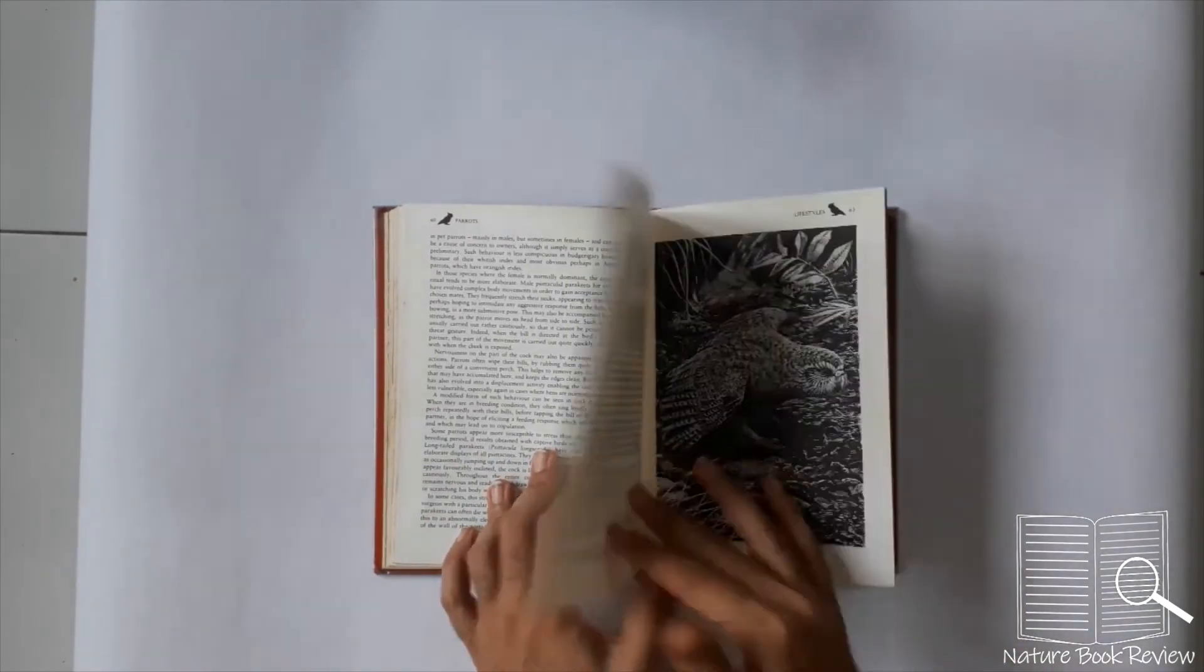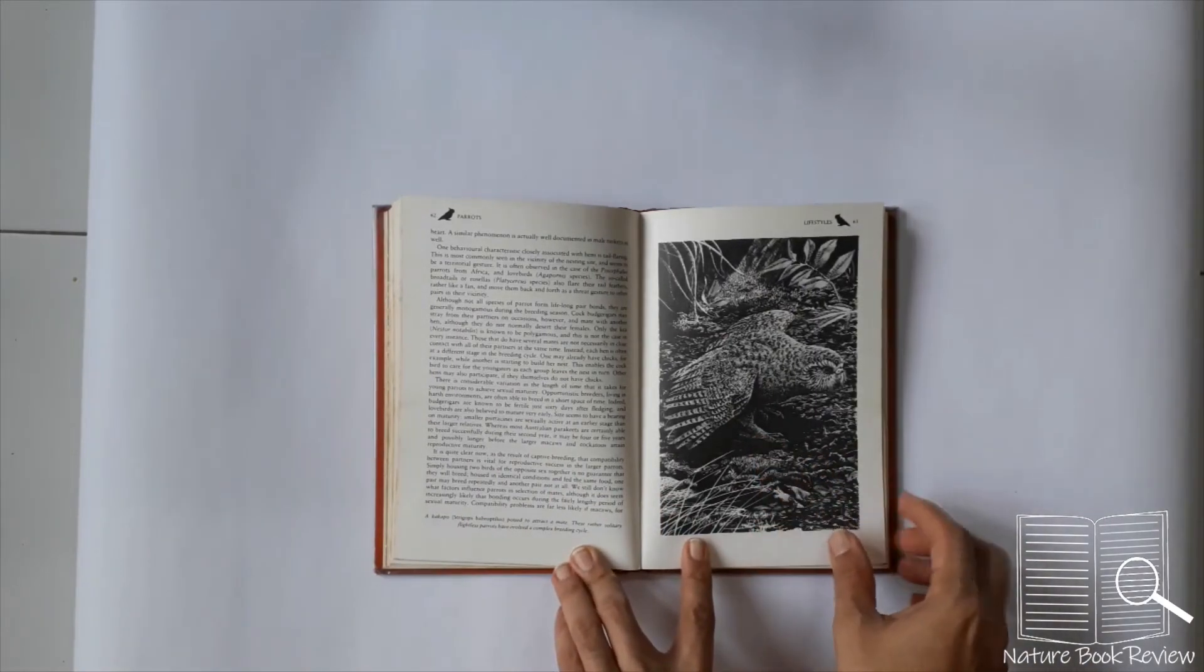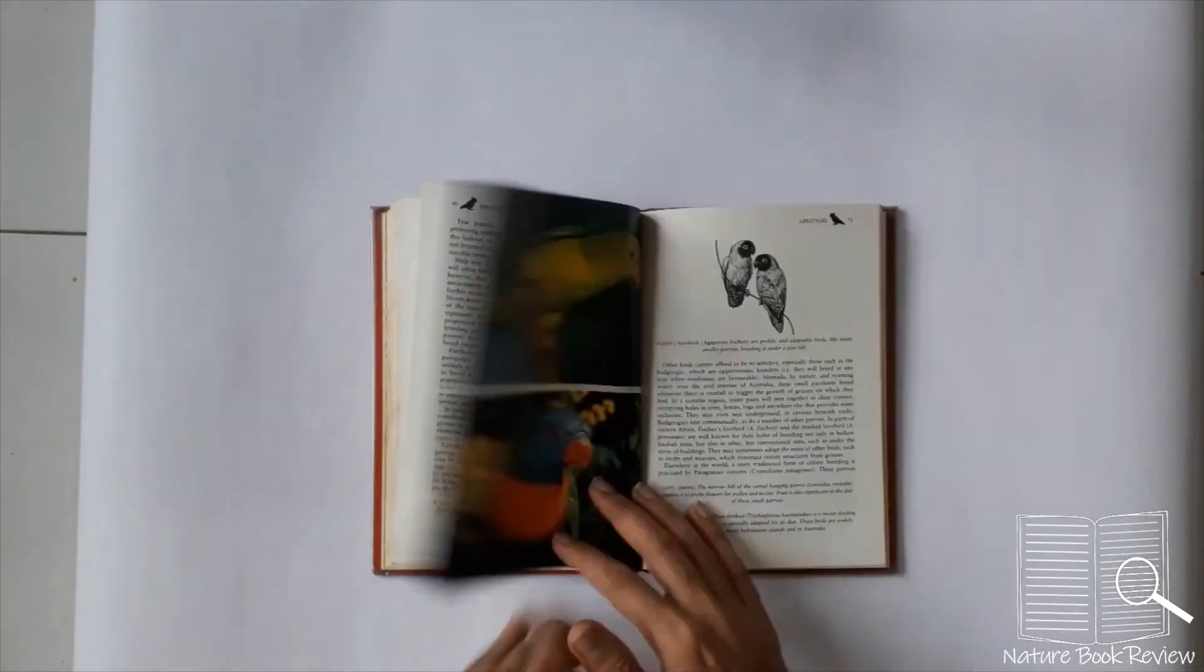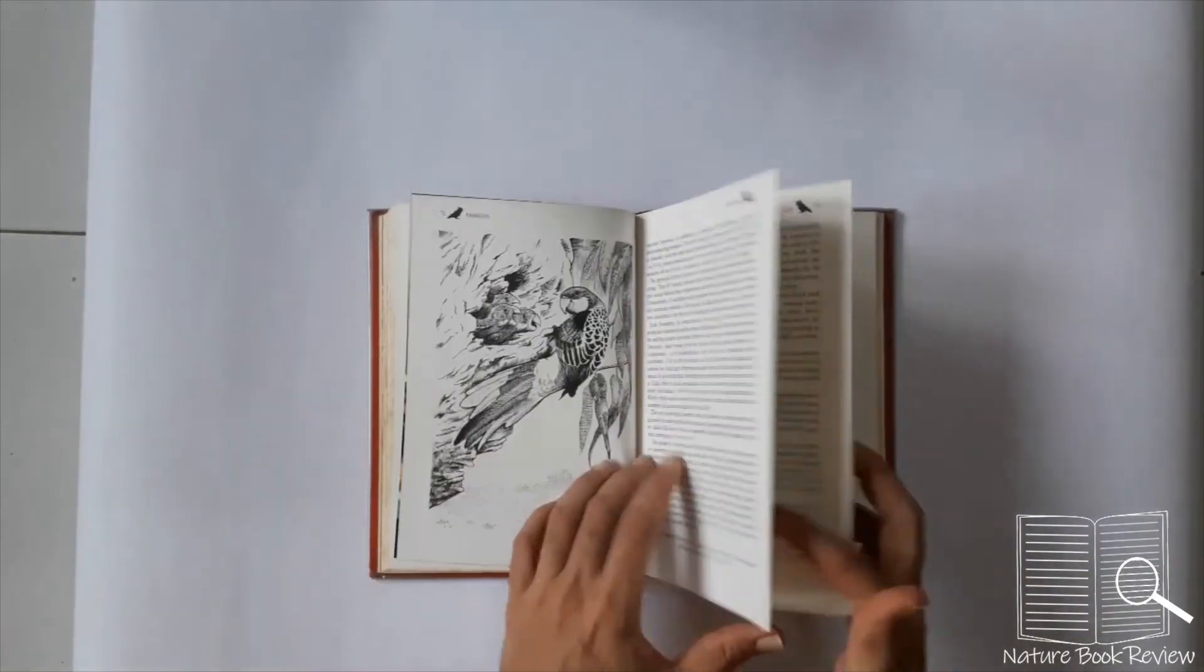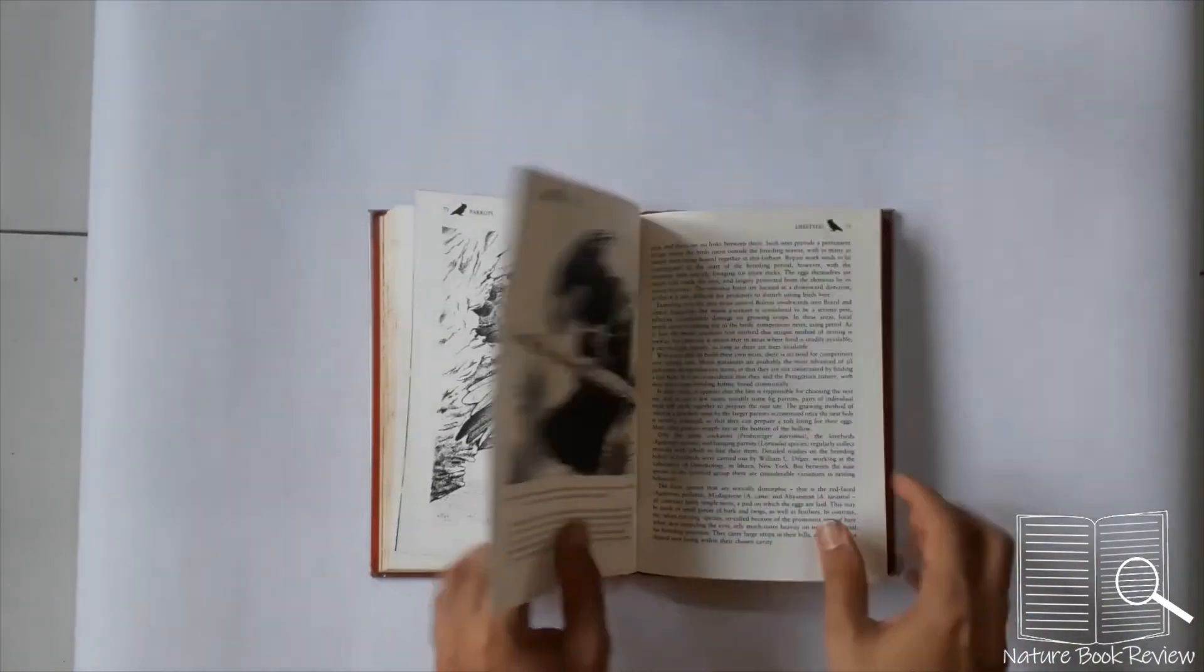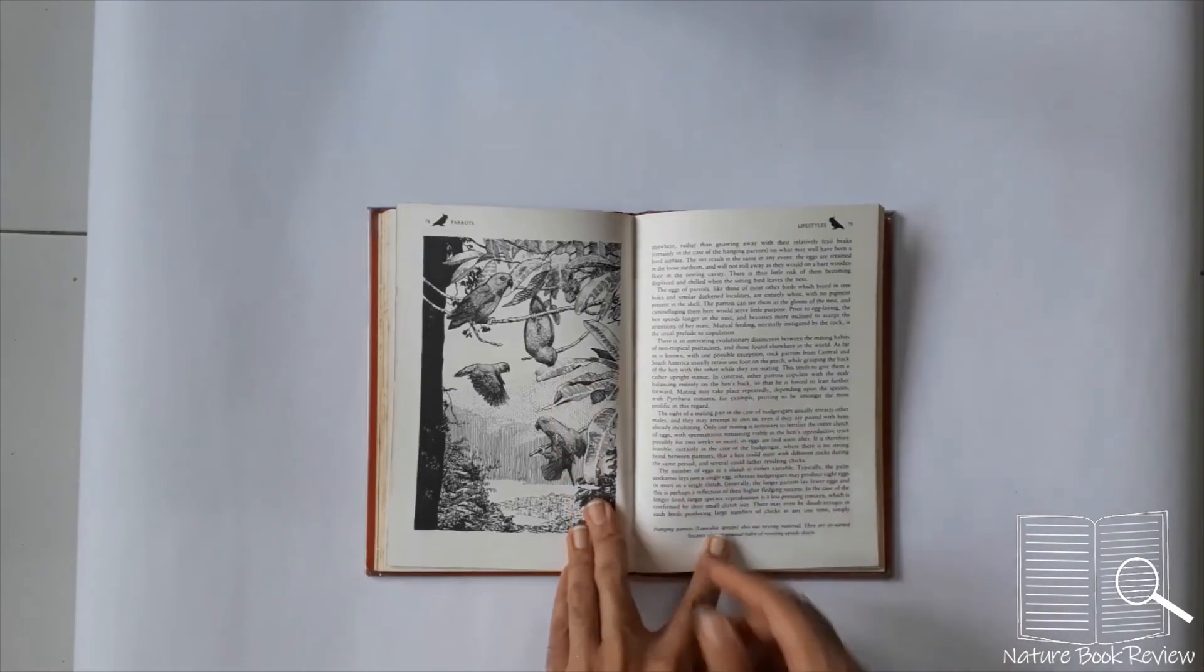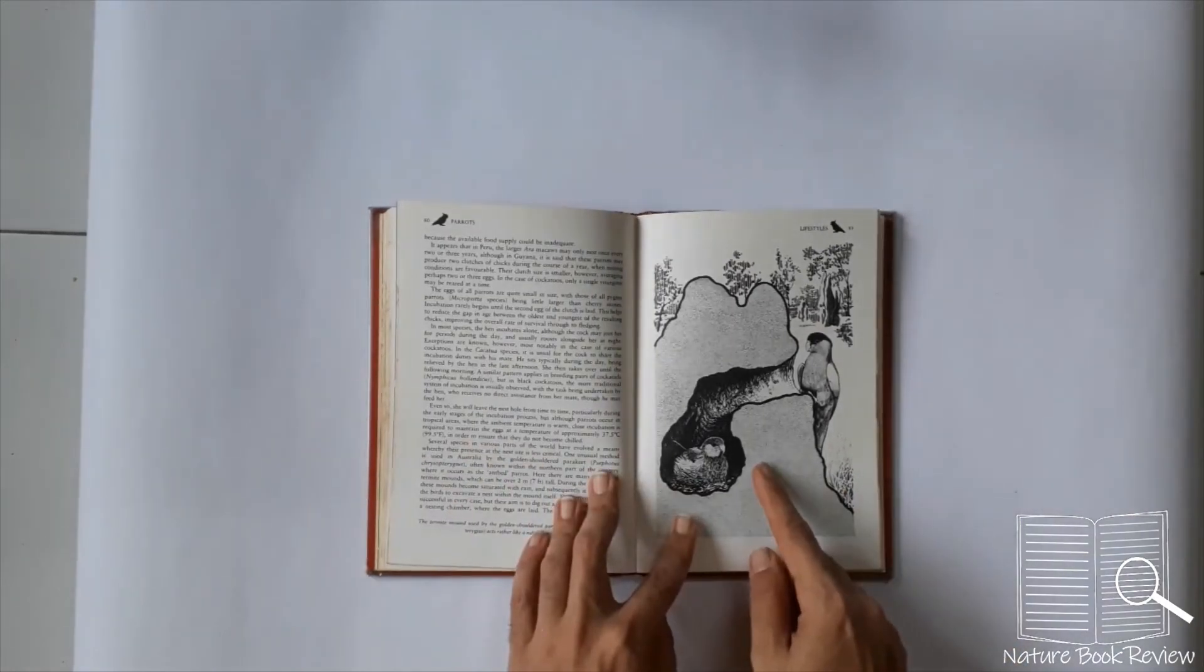Masked lovebird. Then this is a kakapo, a flightless parrot from New Zealand. Then different lovebirds, conures, gaudy colors. Then breeding - parrots are known to breed in the holes. Then there are some parrots like this vernal hanging parrot. It is one of the most acrobatic parrots you can come across. So this is how structure of the parrot nest is.